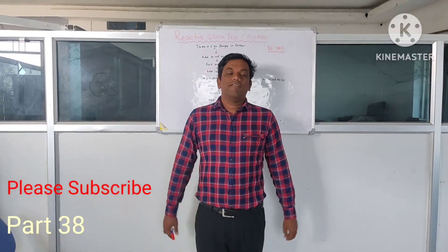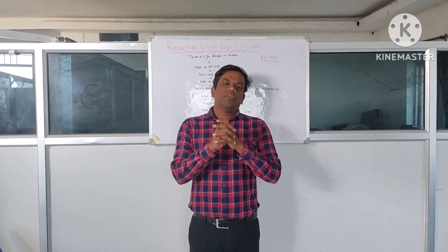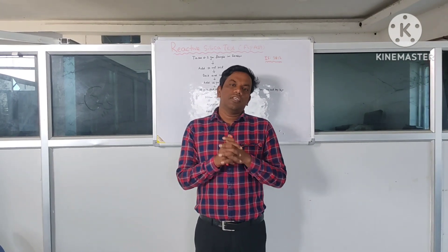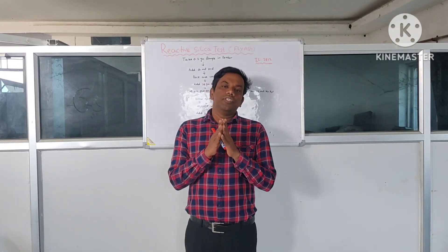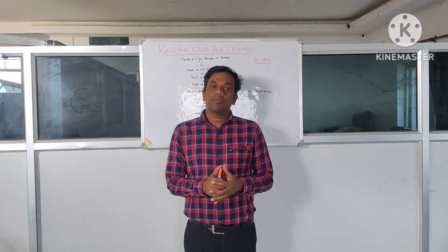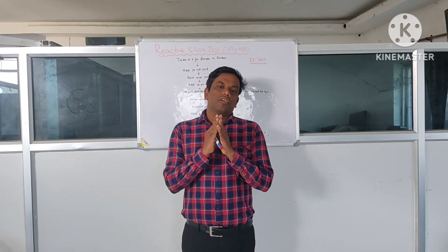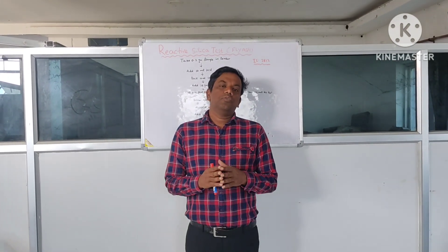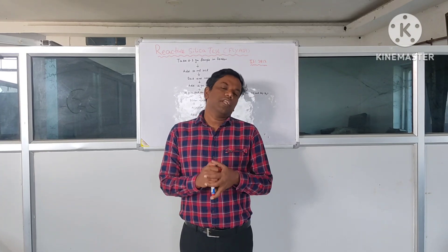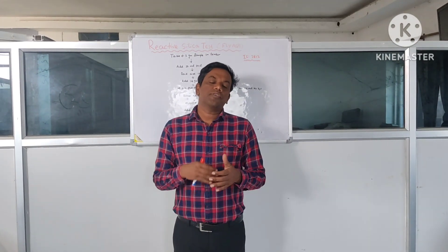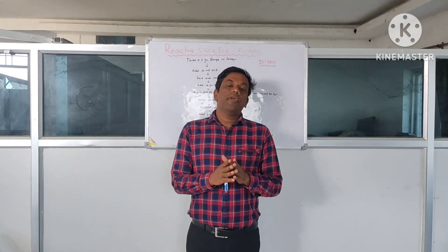Good morning to all of you. Myself Yidusuna Paigraya. Today my lesson is about how to determine the reactive silica present in fly ash. You know fly ash is the raw material which is required for production of pozzolana and pozzolana cement. And 20% is the minimum requirement for reactive silica. I have already shared many videos regarding civil engineering.